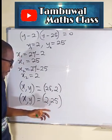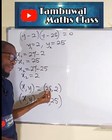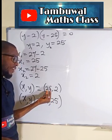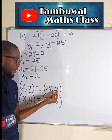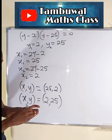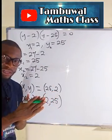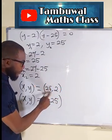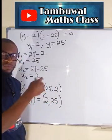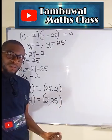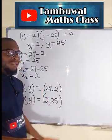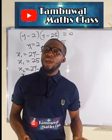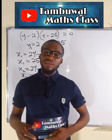These are the two possible solutions. x can be 25 or 2, while y correspondingly is 2 or 25. To verify: 25 plus 2 is 27, and 25 times 2 is 50. Likewise, 2 plus 25 is 27, and 2 times 25 is 50. So this is definitely the correct solution. And this is all I have for you today. Thank you for watching. Do have a nice day.